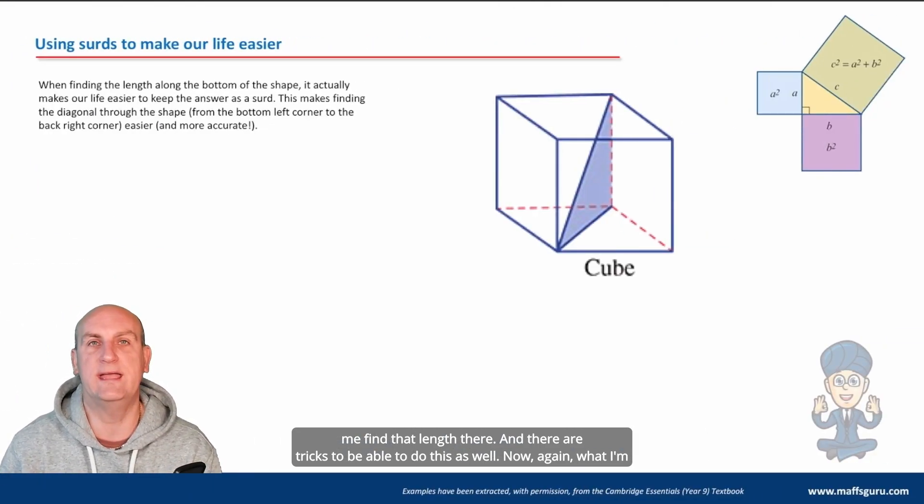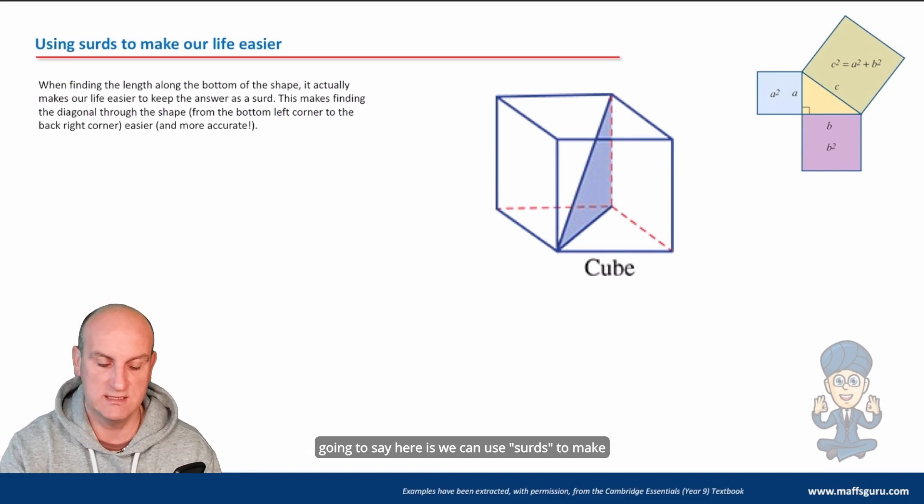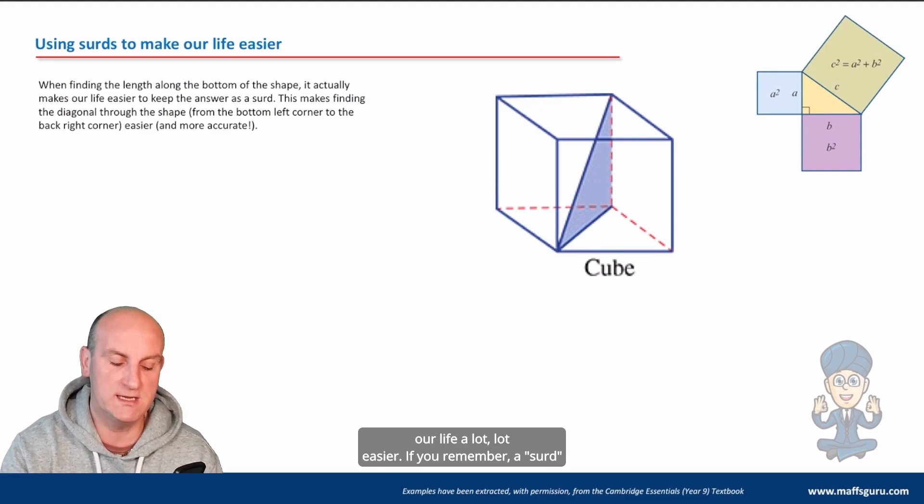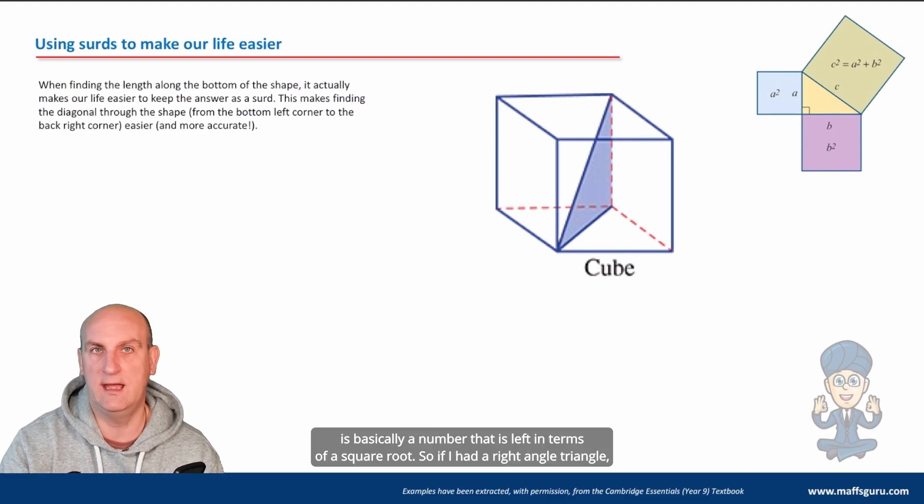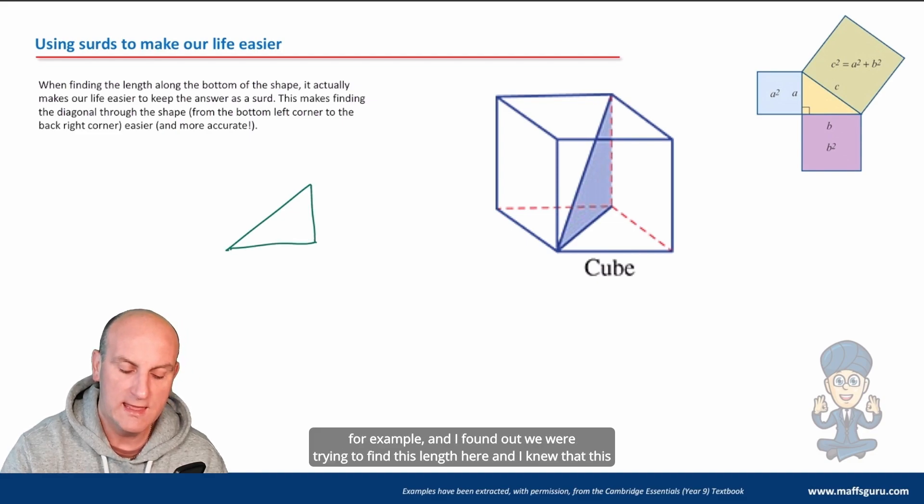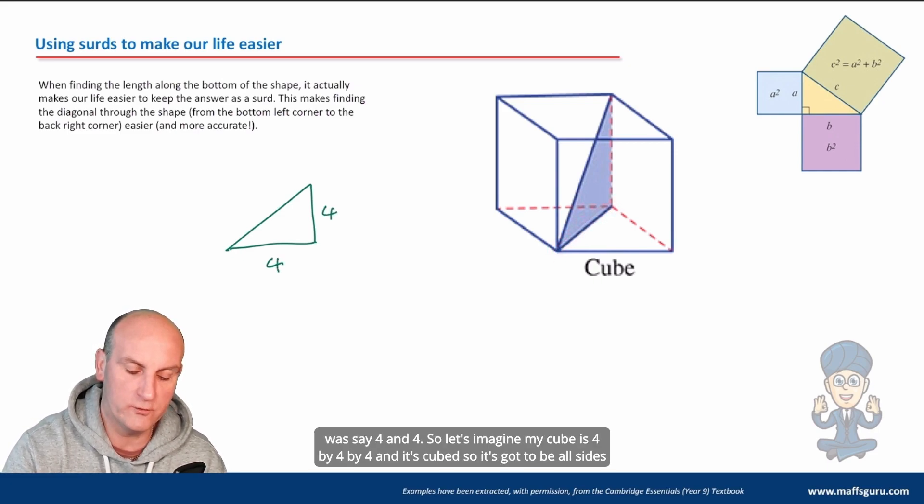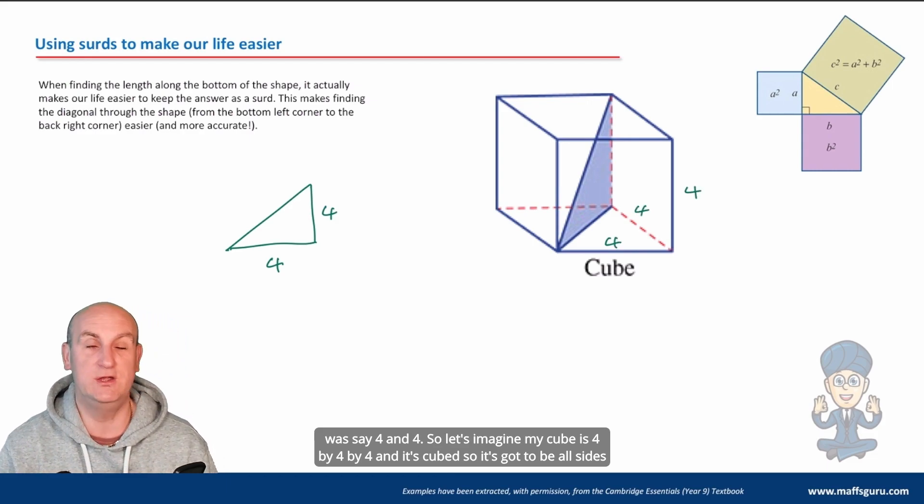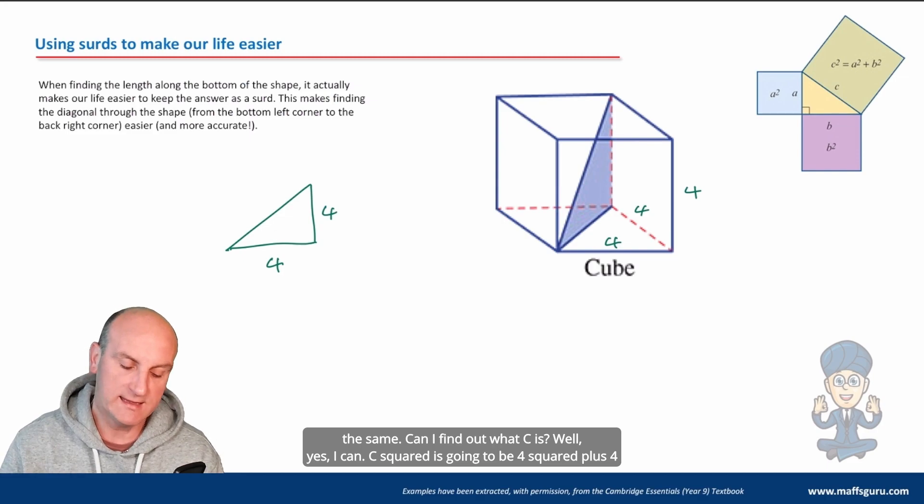Now again what I'm going to say here is we can use surds to make our life a lot easier. If you remember a surd is basically a number that is left in terms of a square root. So if I had a right angle triangle and we were trying to find this length here and I knew that this was say four and four, let's imagine my cube is four by four by four and it's cubed so it's got to be all sides the same. Can I find out what c is?